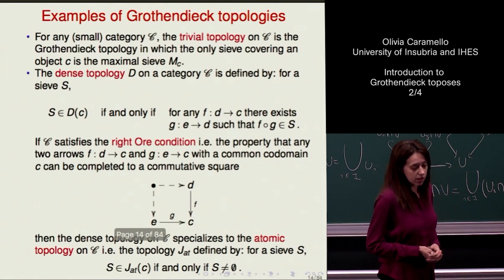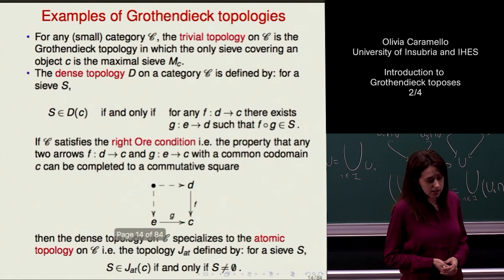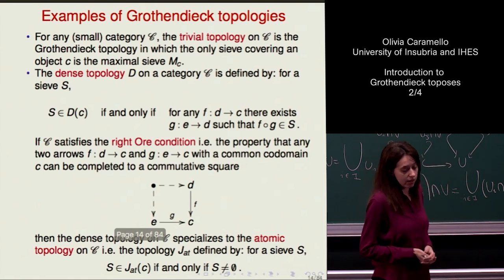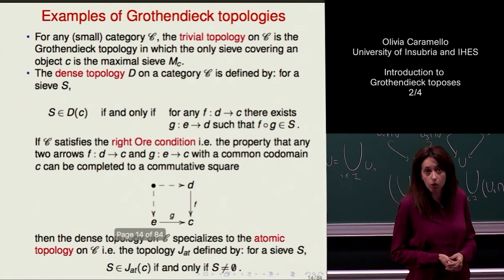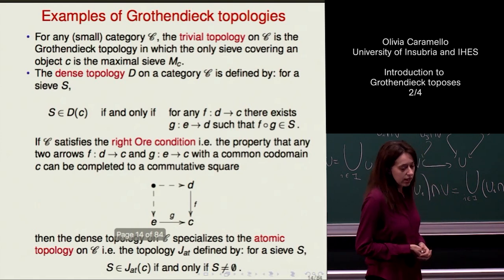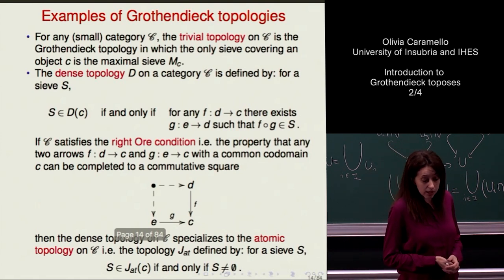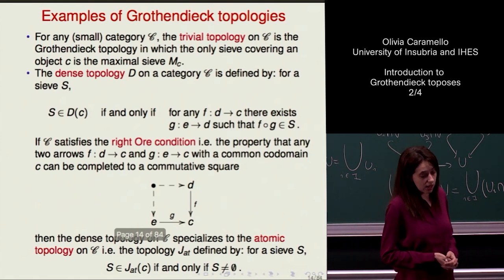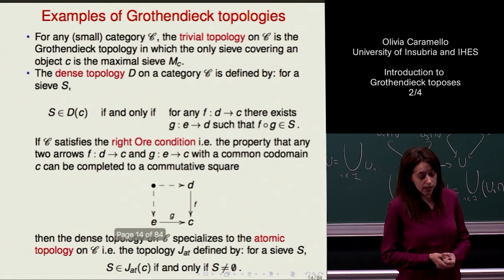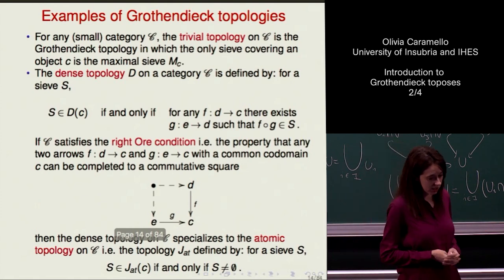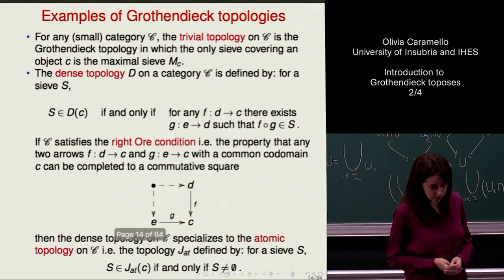For any small category, you can always define a Grothendieck topology on it in a trivial way, just by taking the maximal sieves on all the objects of the category. All the axioms are trivially satisfied. This is important because when we define sheaves on a site, we will see that sheaves on trivial sites — where the topology is trivial — are just presheaves. So one gets presheaves by taking sheaves with respect to the trivial topology.